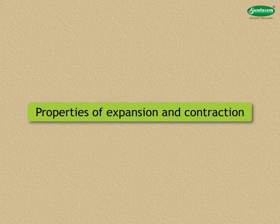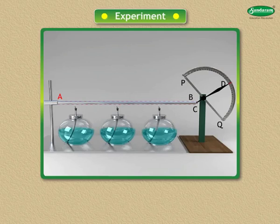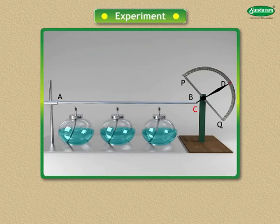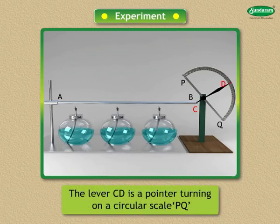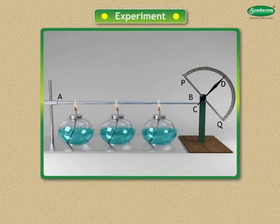As shown in the figure, fix the end A of a metal rod AB firmly on a stand. Keep the other end B of the rod free and touching the end C of a lever CD. The lever CD is a pointer which turns on a circular scale PQ. Heat the rod.